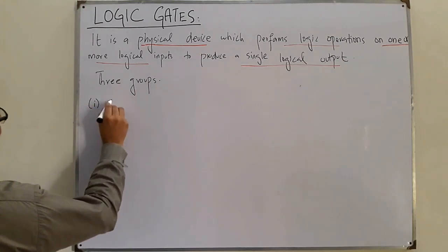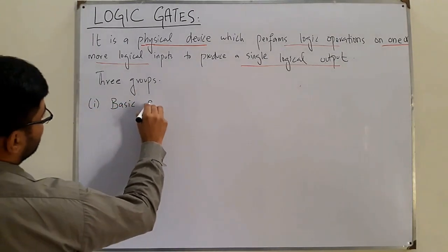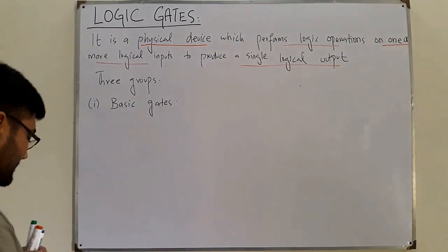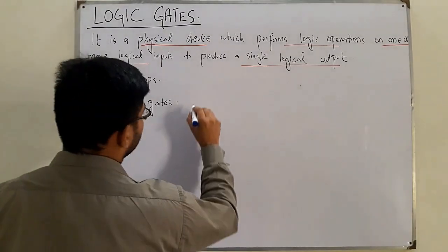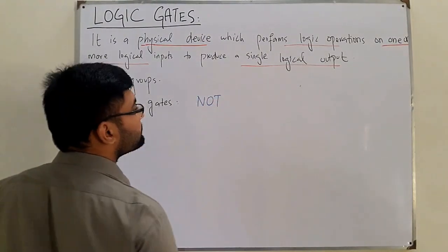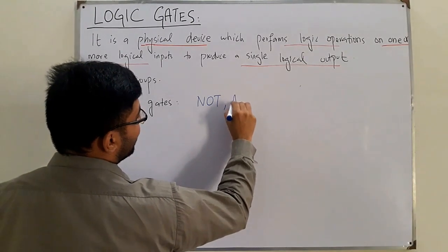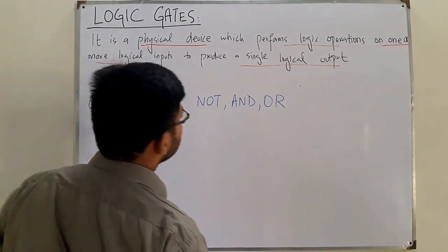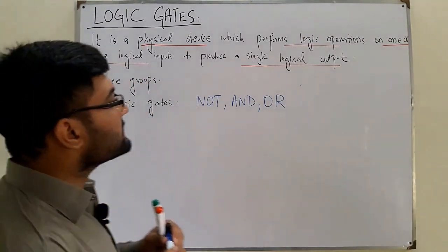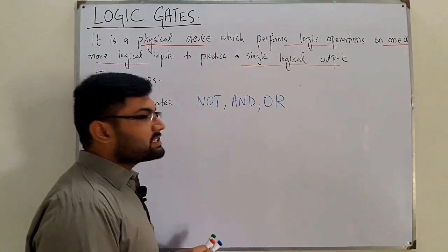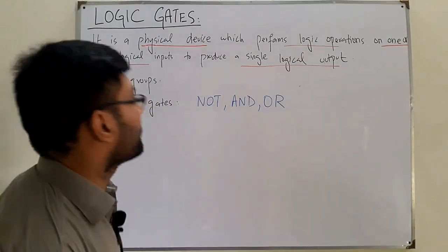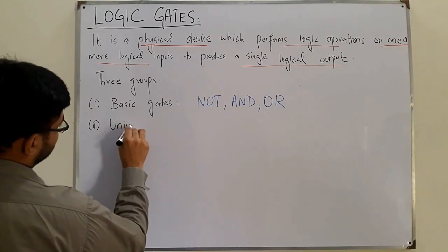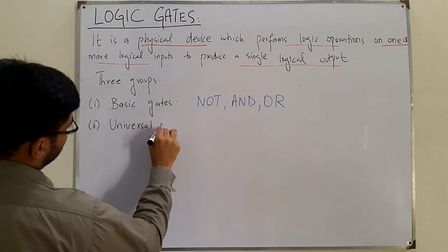The first group is the basic gates. In the basic gates we have the simpler gates: the NOT gate, the AND gate, and the OR gate. We've seen these previously in Boolean algebra, but today we'll give them a brief review. The second category is the universal gates.